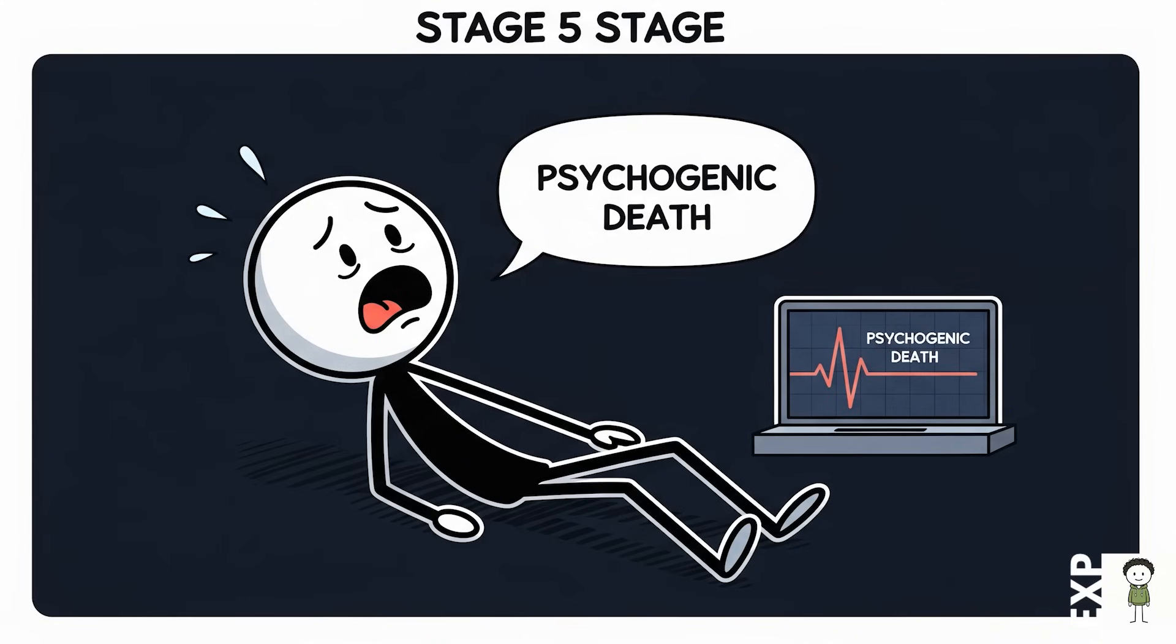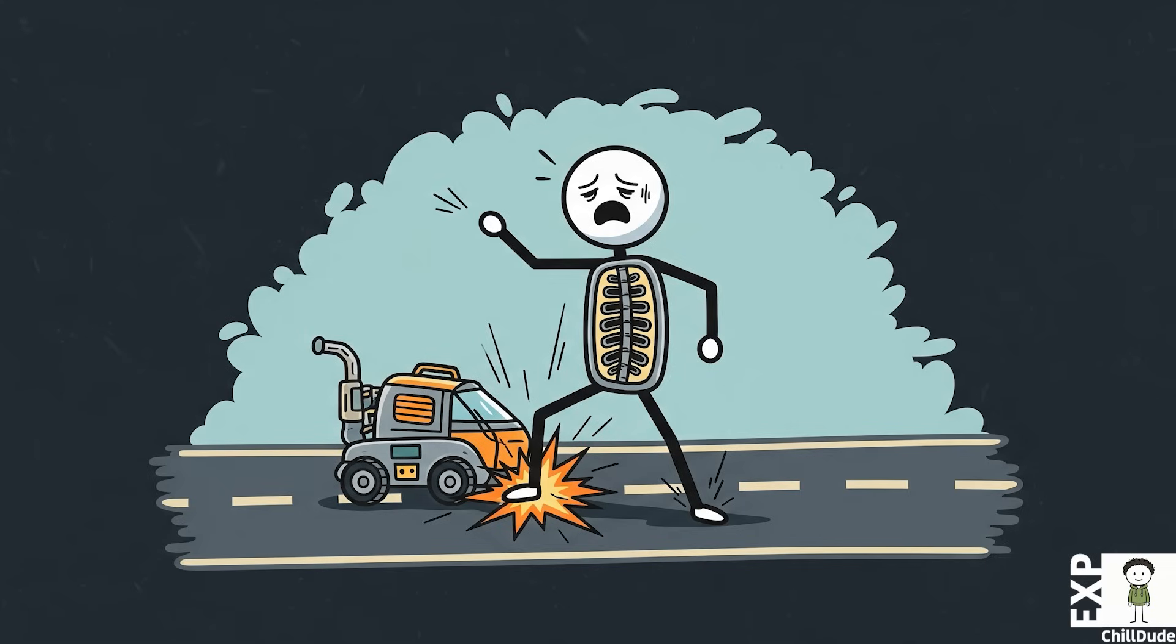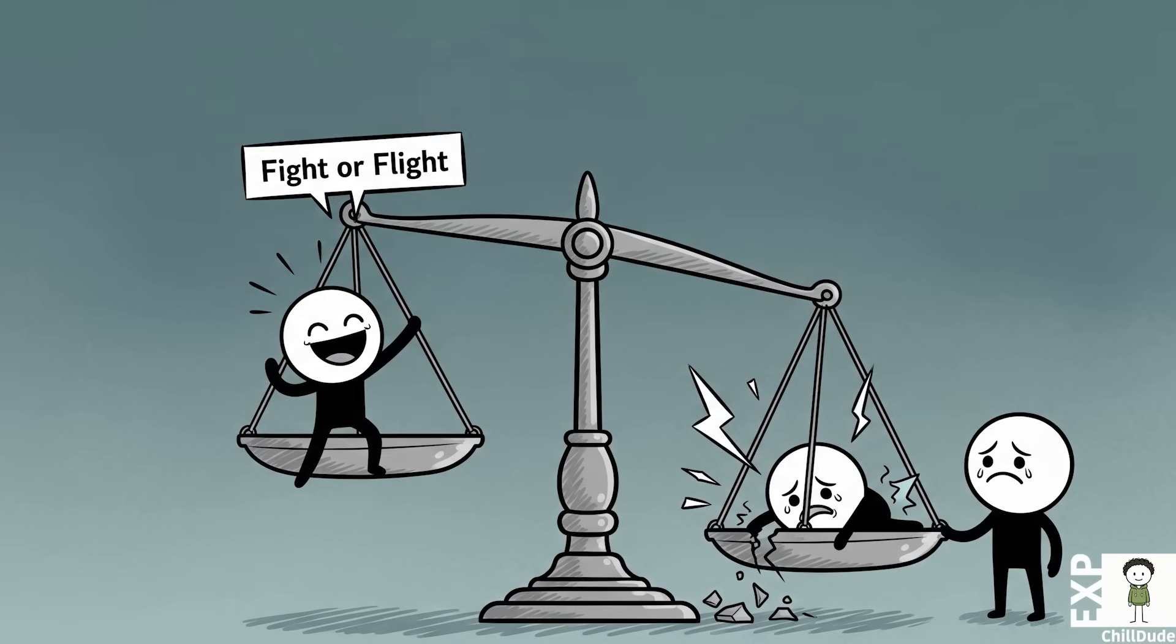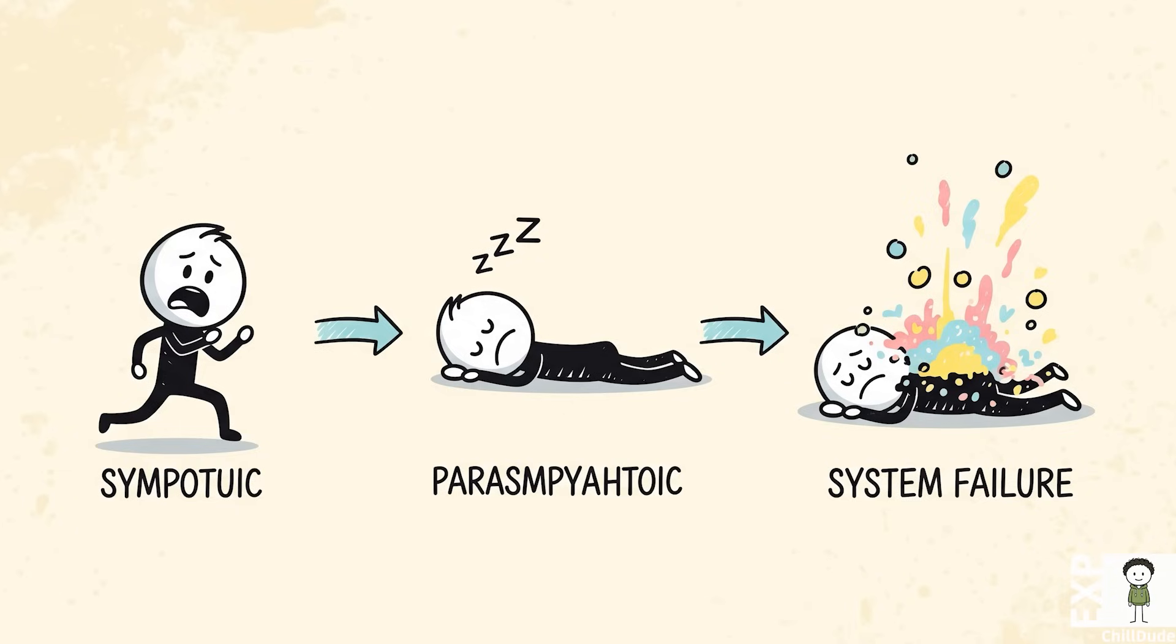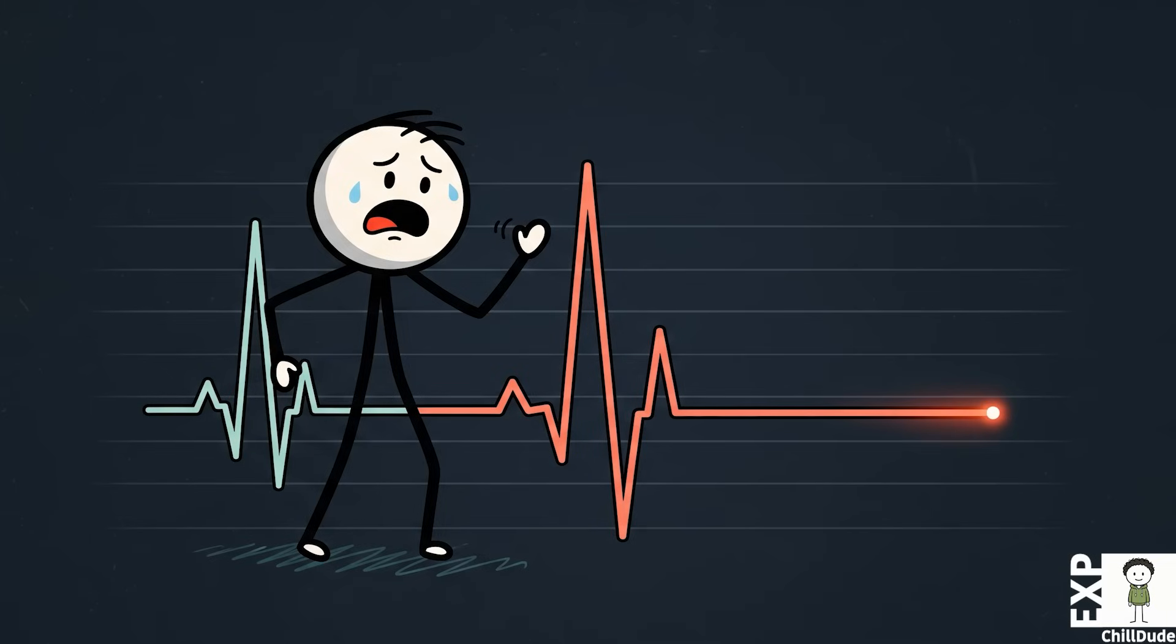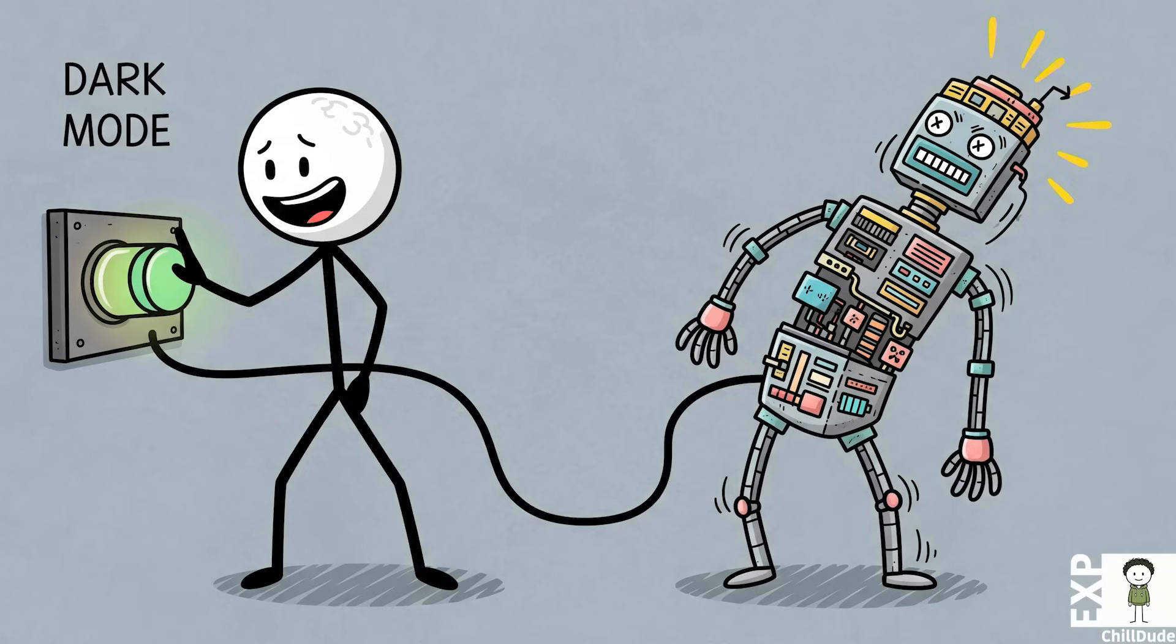The fifth and final stage is psychogenic death. This is the physiological end game. Leach posits that after a prolonged period of the body being primed for a fight-or-flight response that never resolves, the system finally crashes. The overactive sympathetic nervous system gives way to an unopposed catastrophic surge from the parasympathetic system, which governs rest. This leads to a sudden dramatic drop in blood pressure and a slowing of the heart rate until it simply stops. The body, following the mind's lead, switches itself off.